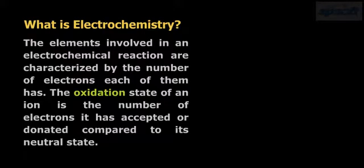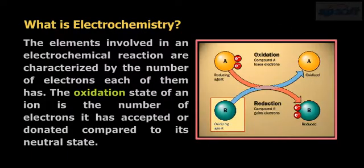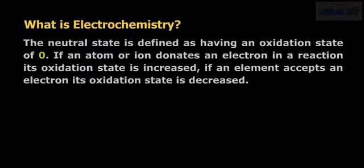The elements involved in an electrochemical reaction are characterized by the number of electrons each of them has. The oxidation state of an ion is the number of electrons it has accepted or donated compared to its neutral state. The neutral state is defined as having an oxidation state of zero.